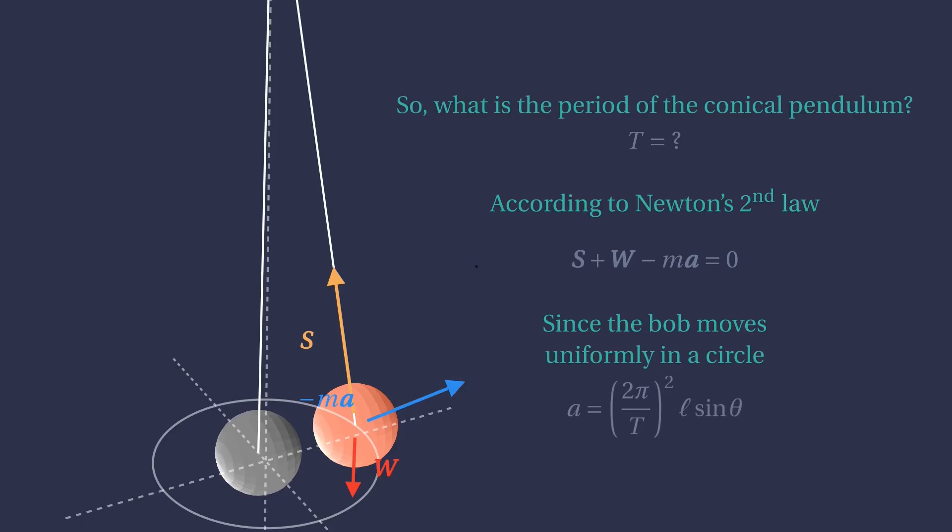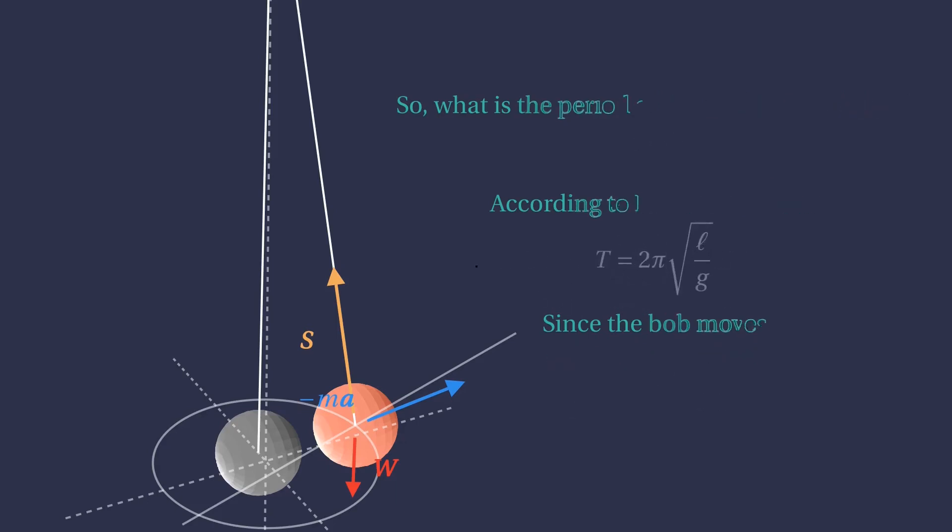Now we consider the balance of forces projected in the direction orthogonal to the string, to avoid dealing with the tension on the string. We can use the small angle approximations again. And after some rearranging, we find that the period of the pendulum is 2π times the square root of L over g.